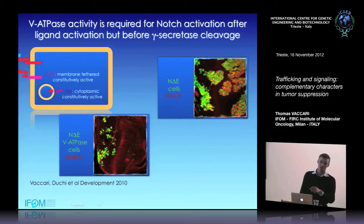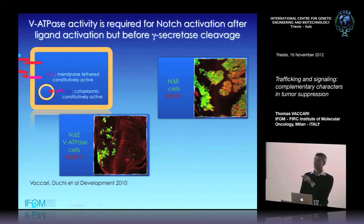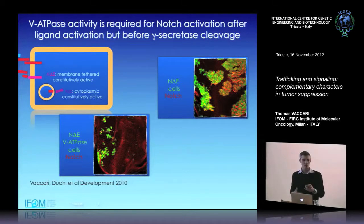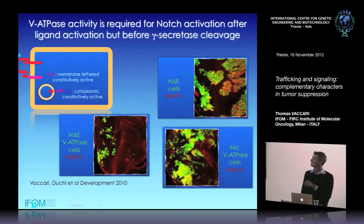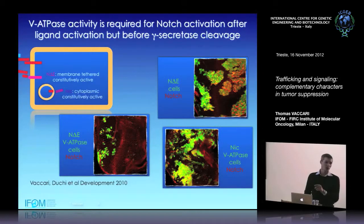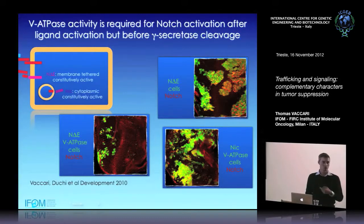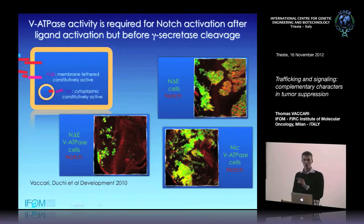To confirm this, we expressed a cytoplasmic form of Notch, which is constitutively active and, in normal cells, makes huge clones. The question was what it would do in V-ATPase mutant cells — and it was completely indistinguishable from wild-type cells. If you express the pre-cleaved Notch that can go into the nucleus, sit on promoters, and activate transcription, the cells behave normally.